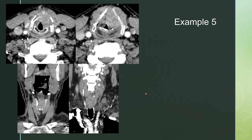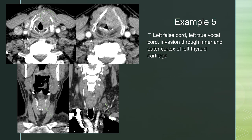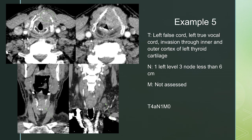Last but not least, we have another large lesion — a bulky mass extending across the anterior commissure with destruction of the thyroid cartilage, seen through and through on both sides. On the coronal view, there is a glottic and supraglottic lesion with erosion of the thyroid cartilage. There is an abnormal left level 3 lymph node with stranding around it, worrying for extracapsular extension — to be confirmed on pathologic diagnosis. This involves the left false cord, left true cord, and invades through the inner and outer cortex of the left thyroid cartilage. One left level 3 lymph node less than 6 centimeters. Distant mets not assessed on this CT. This stages as T4A, N1, M0.